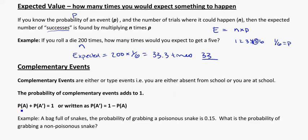So what this statement here says is probability of A plus the probability of not A, that means not A, the little apostrophe there, is equal to one. Or is written as the probability of not A is equal to one minus the probability of A happening.